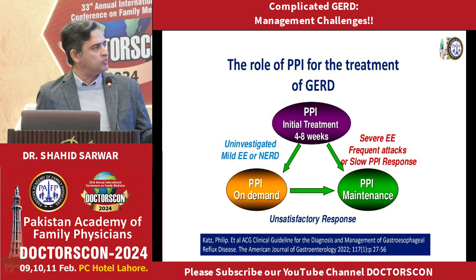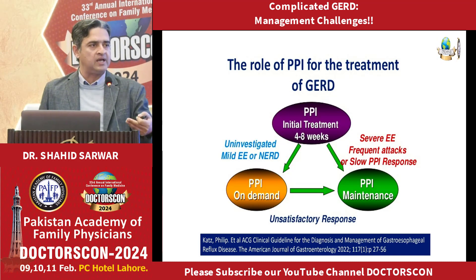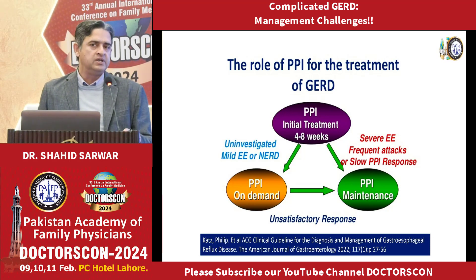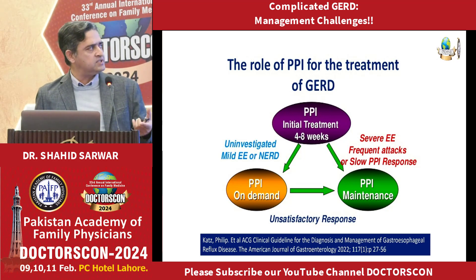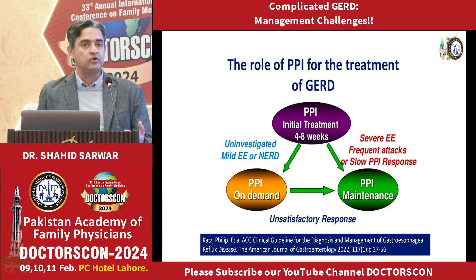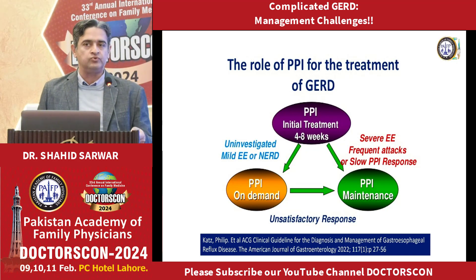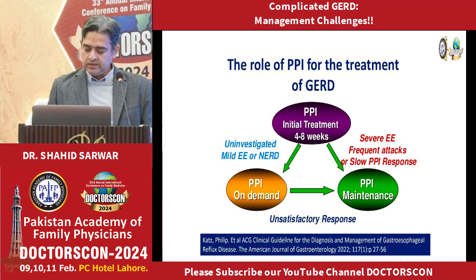We use proton pump inhibitors for management, generally given for at least eight weeks. If the patient has non-erosive reflux disease or no endoscopy has been performed, treatment is generally stopped at eight weeks while continuing lifestyle modifications. If reflux disease is documented on endoscopy with severe changes, long-term PPI may be needed, though every two to three months you should try to reduce or stop the medication.